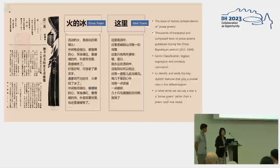So in this study, we focus on thousands of translated and originally composed texts of prose poems and neo-poetry published during the China Republic period, and in particular on the rhythmic forms. We use machine learning, logistic regression, similarity calculation, and genre classification experiments.